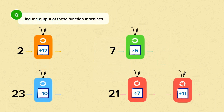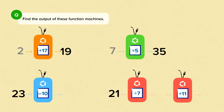Find the output of these function machines. 2 plus 17 equals 19. 7 times 5 equals 35. 23 take away 10 equals 13.